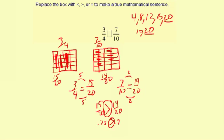So you can see by this visual model that 15 twentieths is greater than 14 twentieths also.